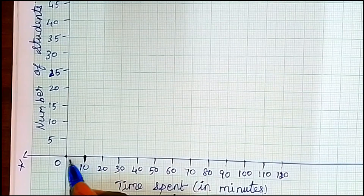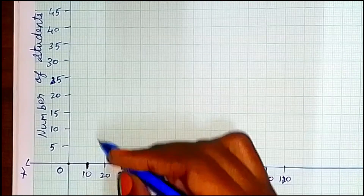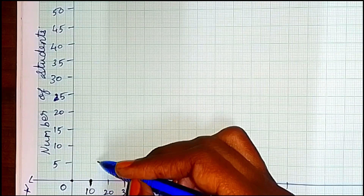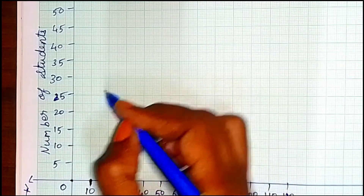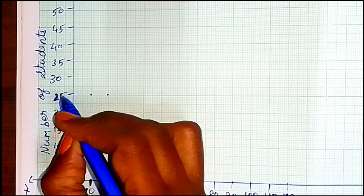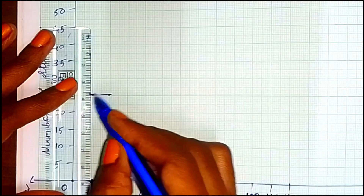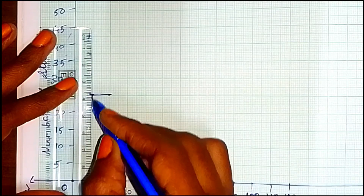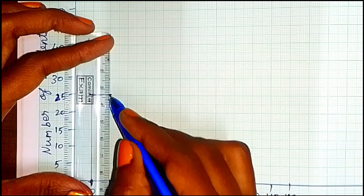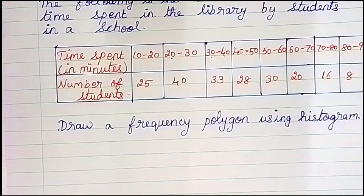First on the x-axis, 10 to 20 — from there we draw a straight line upward. That goes up to 25. From 10 to 20, we go up to 25 students. Then we join with the dark line and the rectangle is complete.